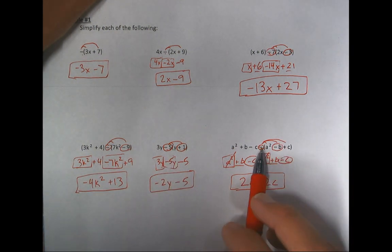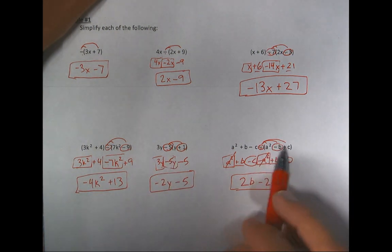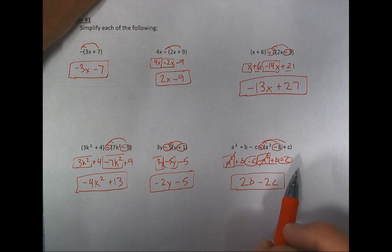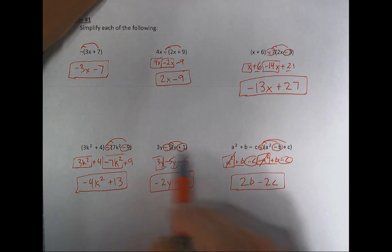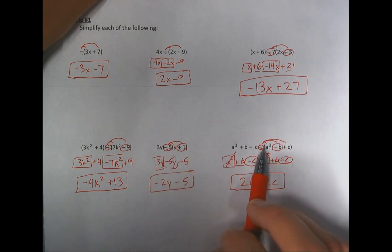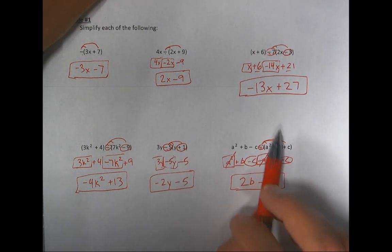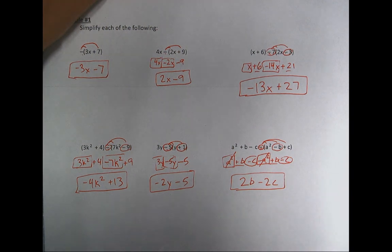The main point of today's lesson: when you see a minus in front of a quantity or parentheses, distribute it as a negative — whether it has a number or not. If there's no number, treat it like a negative one and distribute accordingly.